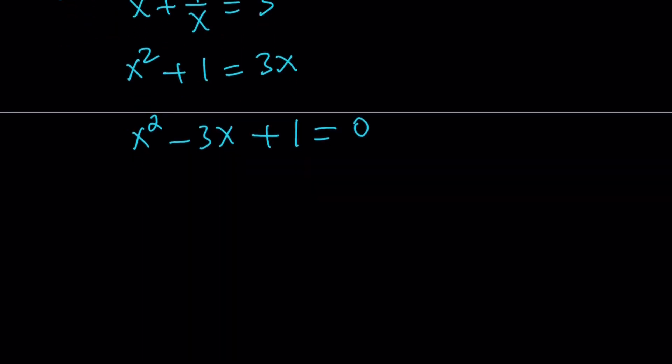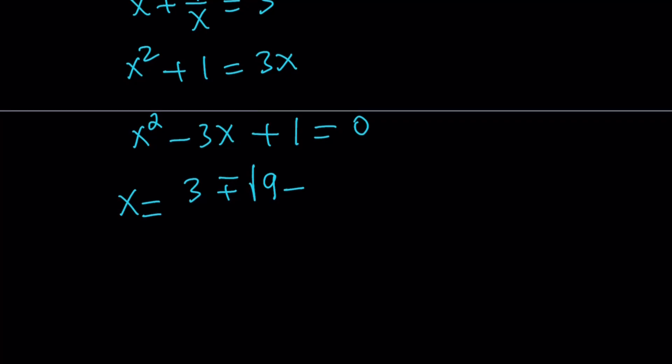Using the quadratic formula, we get the following values. x equals negative b, 3 plus minus square root of b squared, which is 9, minus 4 times ac, which is 4. So this gives us the following values for x, 3 plus minus root 5 over 2.